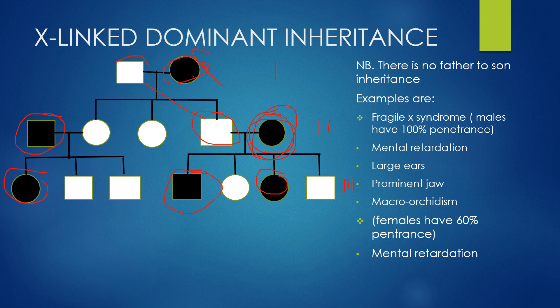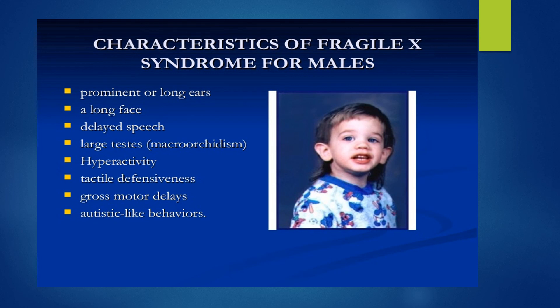An example of an X-linked dominant disease is fragile X syndrome. In fragile X syndrome, males have 100% penetrance, and some symptoms include mental retardation, large ears, prominent jaw, and macro-orchidism, meaning abnormally large testes. Females have 60% penetrance. Other symptoms seen in affected individuals include long prominent ears, a long face, delayed speech, hyperactivity, tactile defensiveness, gross motor delays, and autistic-like behaviors.